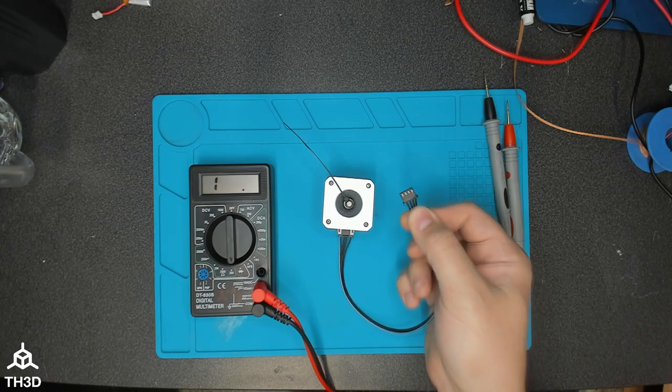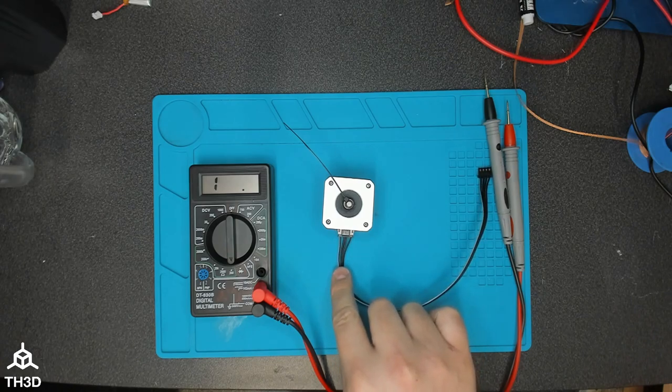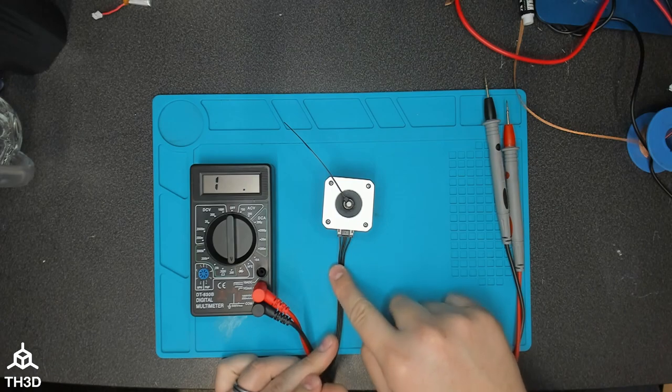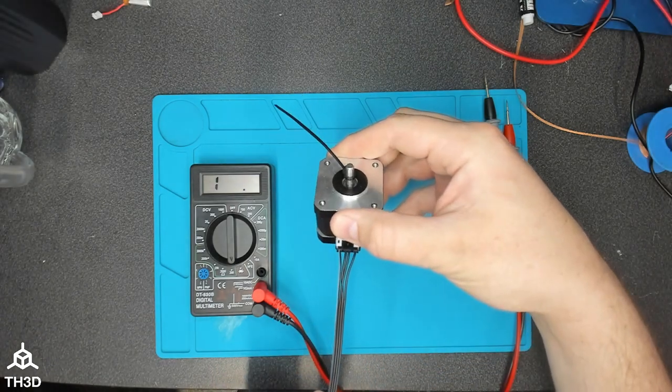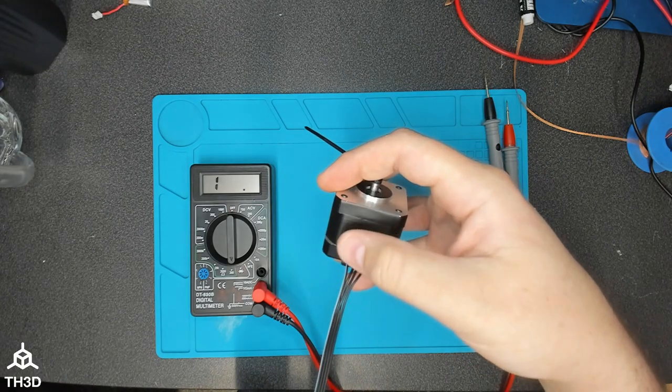Now the easiest way is to measure at the end of your cable, because sometimes stepper motors will have the actual pairs of the wires flipped. As you can see on this one, this center cable rolls over, meaning that the coils on the pin outs here are in a different order than what they are when they get to this cable.